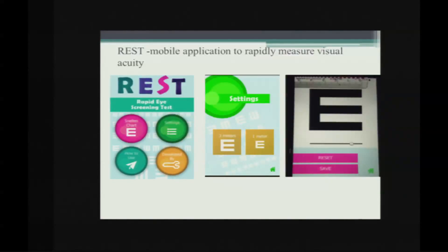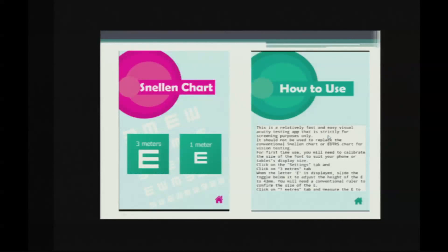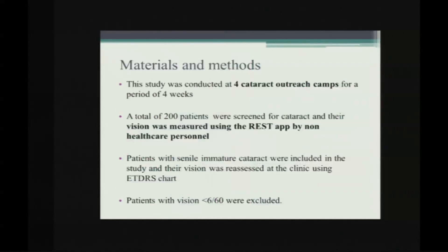If you want to test at one meter, you calibrate it to 14 mm — only the first letter of the optotype. Once these settings are made, you can start the test. You need to place the app at the highest screen brightness. It also has positive cues: if the patient gives a right answer, it plays a positive sound, and if the patient gives a negative answer, it gives a negative sound.